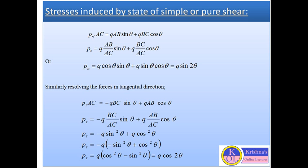Similarly, by resolving the forces along the tangential direction, we have: Pt·AC = −Q·BC·sin θ + Q·AB·cos θ. Simplifying, Pt = −Q·(BC/AC)·sin θ + Q·(AB/AC)·cos θ, which equals −Q·sin²θ + Q·cos²θ, giving the final equation for tangential stress: Pt = Q·cos 2θ.